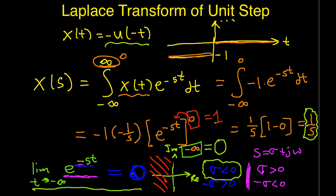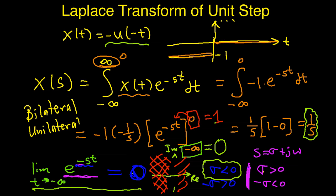The region of convergence for x(t) is the region where sigma is less than 0 — the opposite half-plane compared to the unit step. We used the bilateral transform here; if we tried to use the unilateral transform for this signal, the lower limit would be 0 and the integral would be 0. So this is a case where the unilateral transform differs from the bilateral transform. Even though we got the same algebraic form of 1 over s, the region of convergence is what differentiates the two time waveforms. As engineers, we typically don't worry about this much because we almost always assume signals are 0 for t less than 0. Hopefully this has been useful — this concludes the video. Thank you.